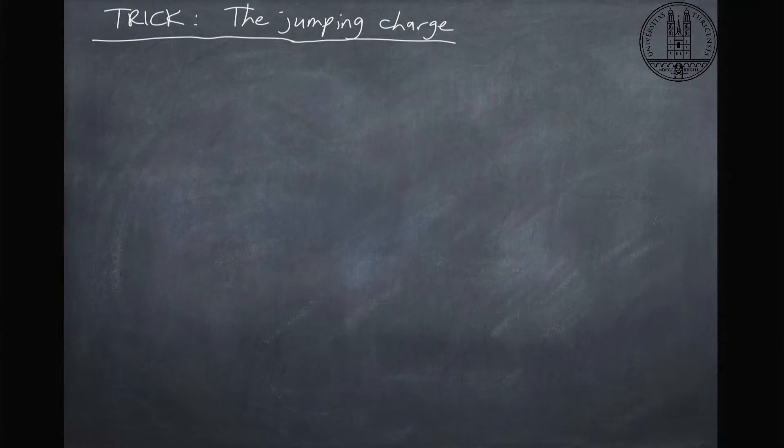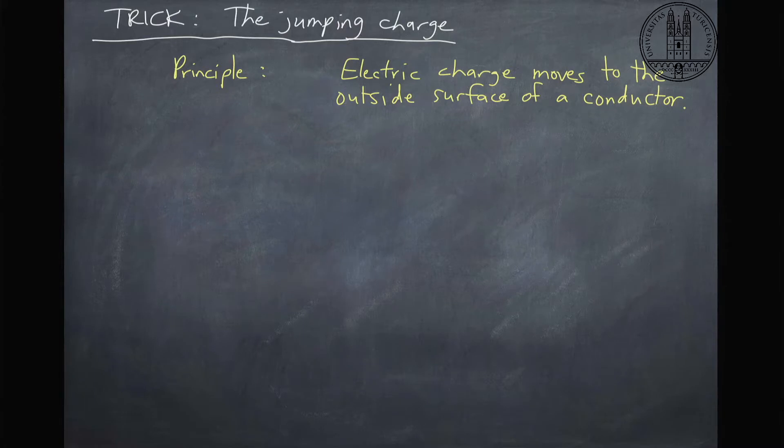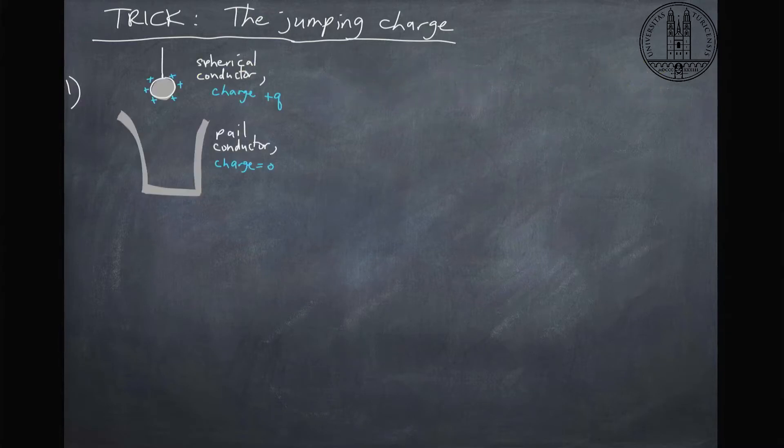So the trick is the jumping charge and the principle is that the electric charge always moves to the outside surface of a conductor. In this case we start with a spherical conductor which we're going to put an electric charge on and we're going to stick it in this pail which is neutral, has no electric charge.